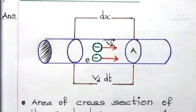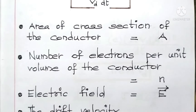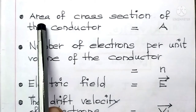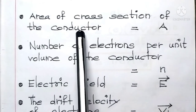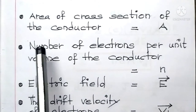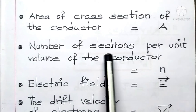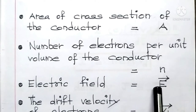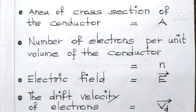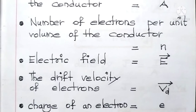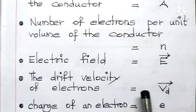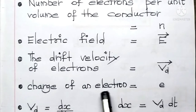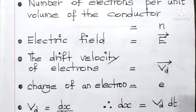Now let us move on to the derivation. Area of cross-section of the conductor is capital A. Number of electrons per unit volume of the conductor is small n. Electric field is capital E vector. Then comes the drift velocity of electrons, which is Vd vector. The charge of an electron is small e.